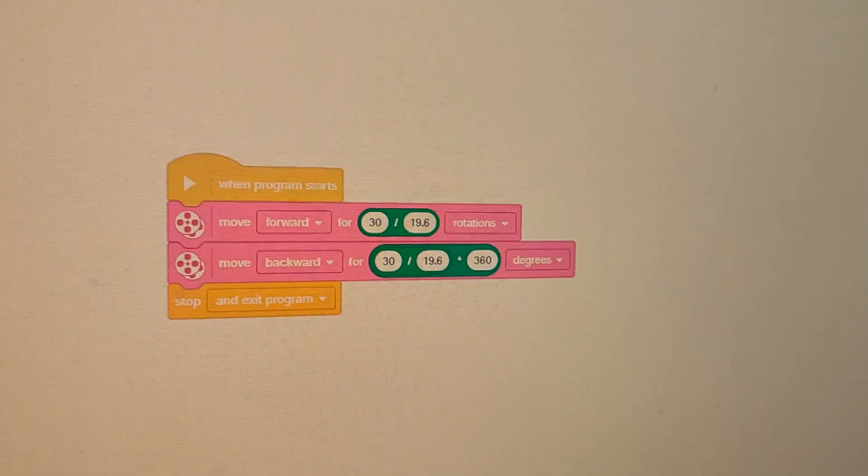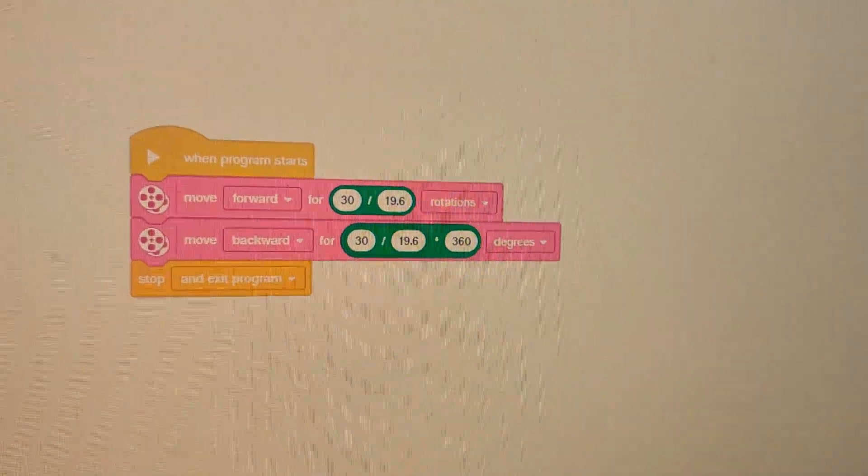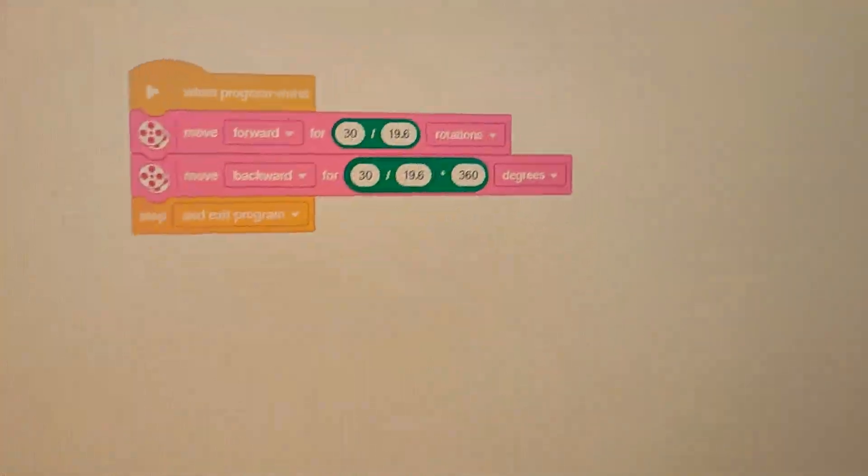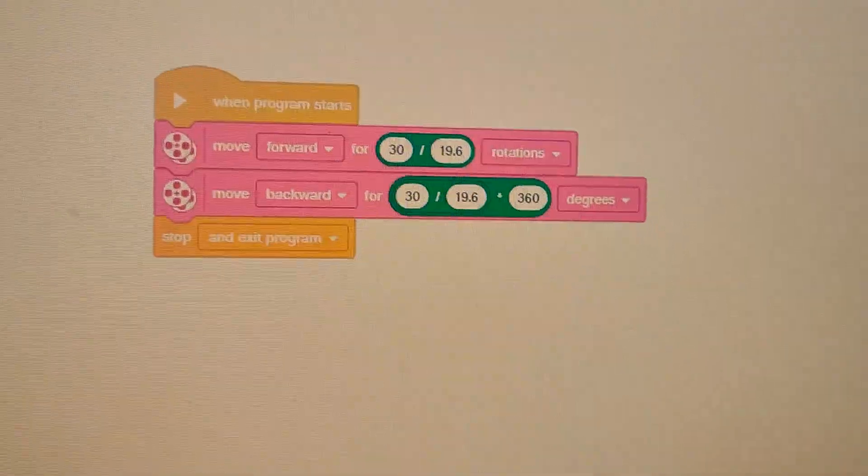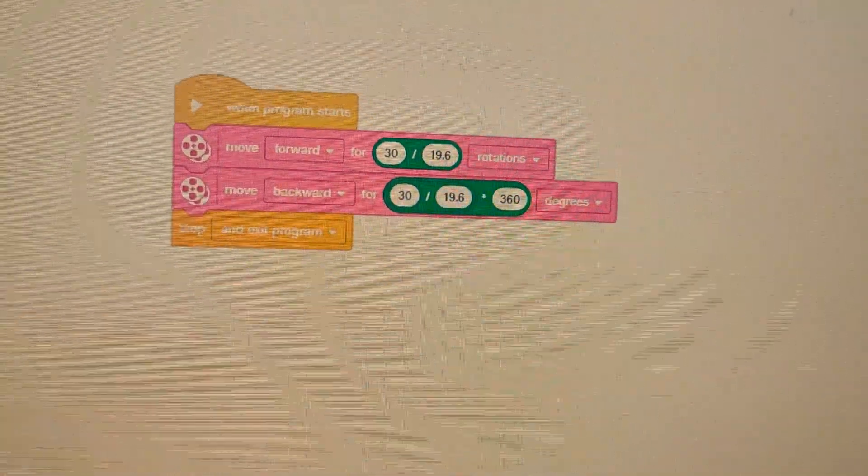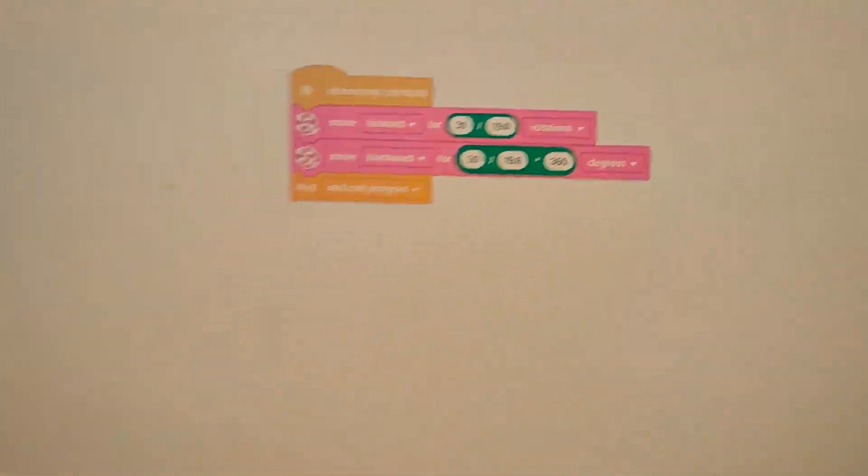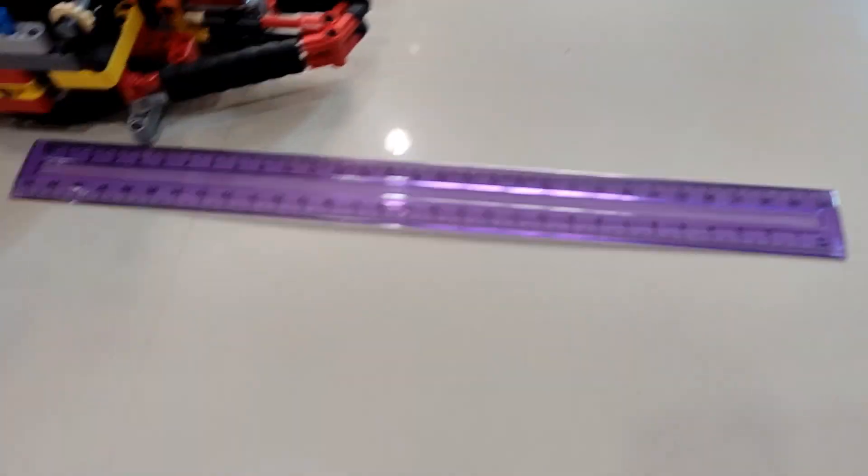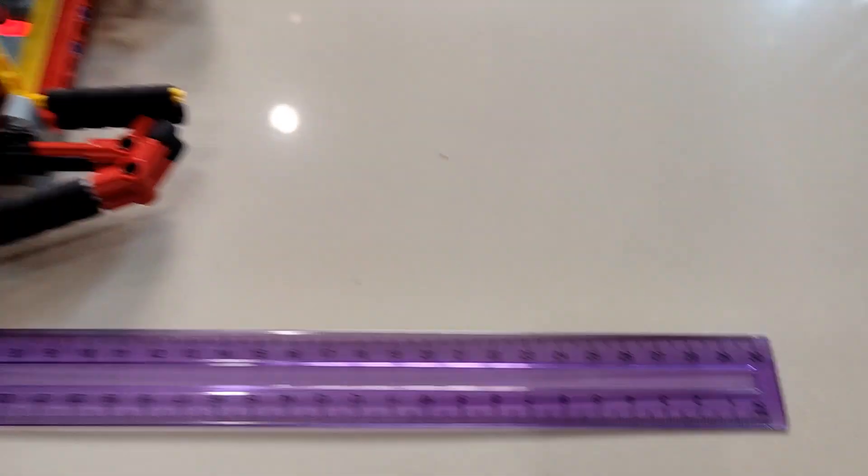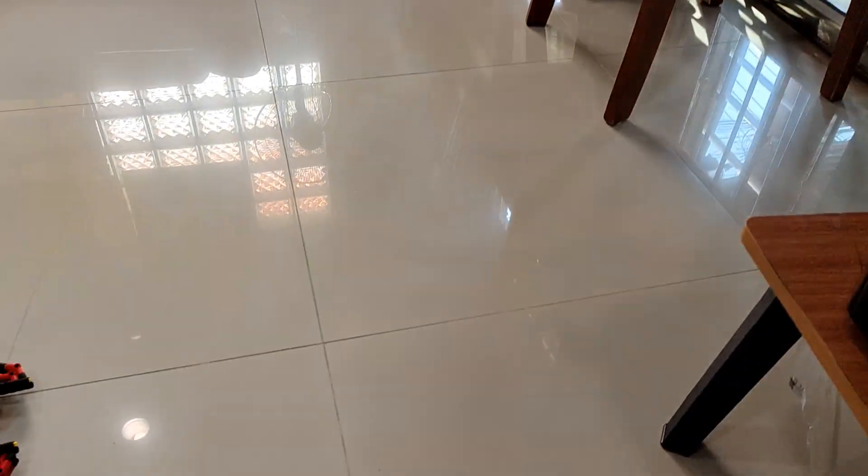Here, I will test the robot by making it move forward 30 centimeters, counting by rotations, and then move backwards for again another 30 centimeters, counting by degrees. And now, I have this ruler right here to measure the robot's distance. And let's run the code.